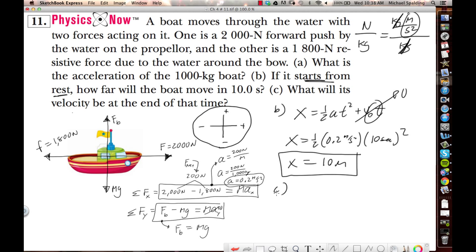Okay, part C, what will its velocity be at the end of 10 seconds? So, that's another kinematic. VF equals V initial plus AT. V initial is 0, so V final. You're going to go A times T, so 0.2 meter per second squared times 10 seconds. This gives 2 meter per second.